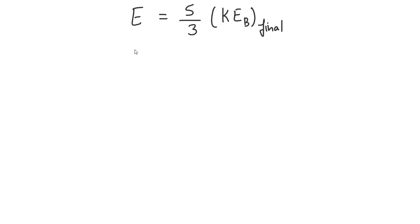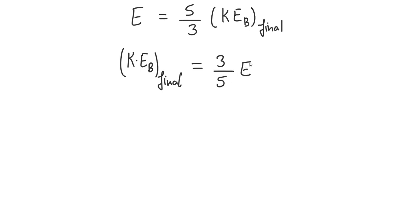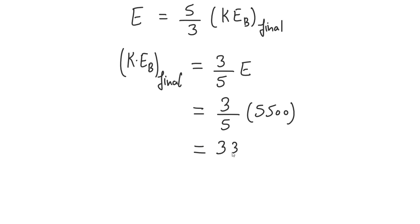Rewriting for the final kinetic energy of B: KE_b equals three-fifths times E. Substituting E equals 5500 joules, we get the final kinetic energy of B equals 3300 joules, which is the required final kinetic energy of particle B.